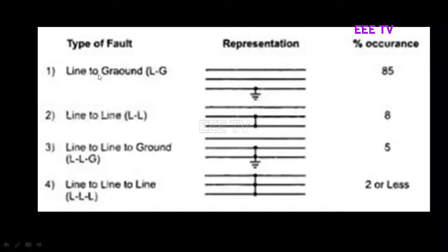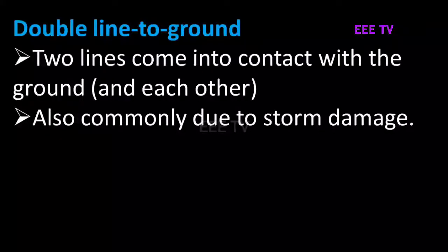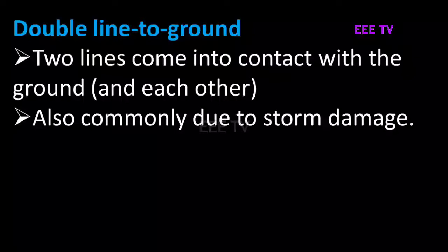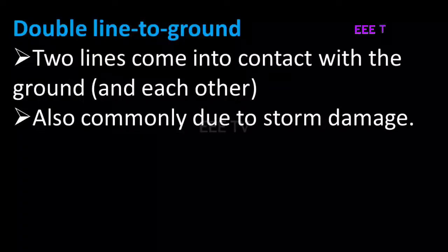The single line to ground fault occurs about 5% of the time. The balanced fault occurs about 2% of the time. The double line to ground fault occurs when two lines contact the ground simultaneously. This covers the main types of faults in a power system. Thank you.